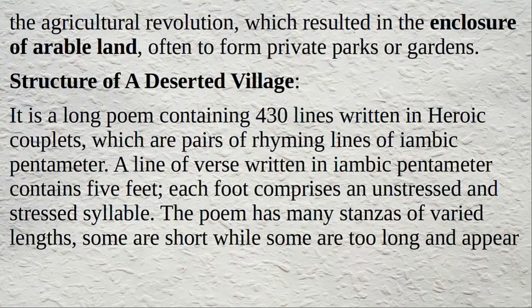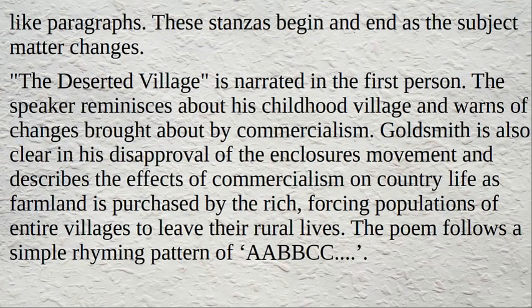The Deserted Village is a long poem containing 430 lines written in heroic couplets, which are pairs of rhyming lines of iambic pentameter. A line of verse written in iambic pentameter contains five feet, and each foot comprises an unstressed and stressed syllable. The poem has many stanzas of varied lengths — some are short while some are too long and appear like paragraphs. These stanzas begin and end as the subject matter changes.